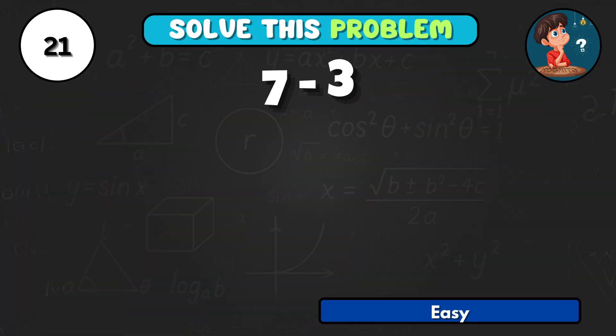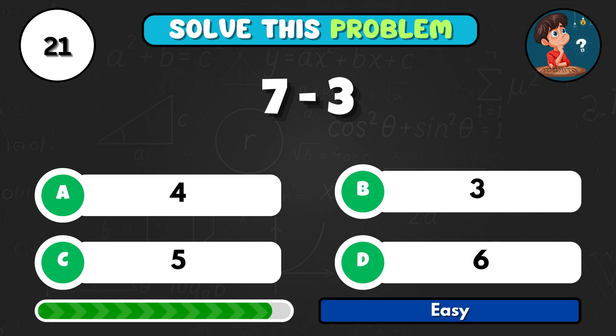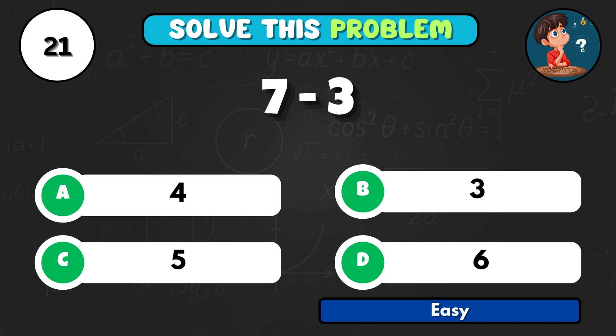What do you get if you take 3 away from 7? That makes it A4.